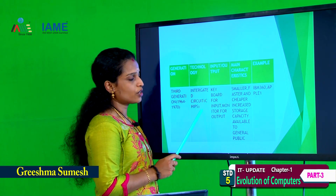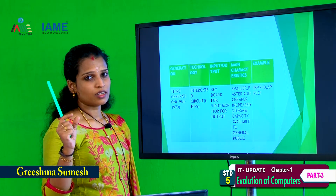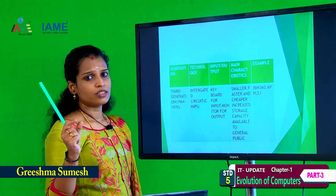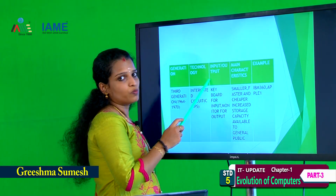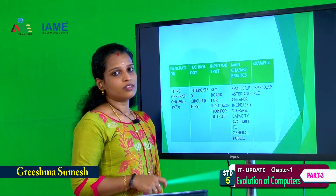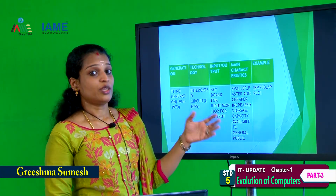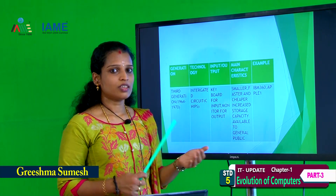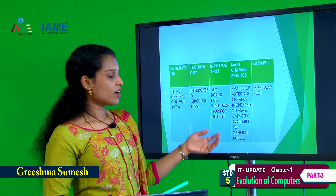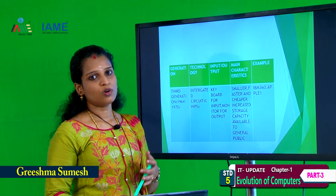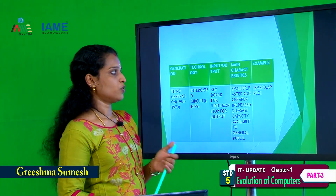Third generation computer used integrated circuits — that is, a chip. Input and output devices changed in third generation computer: input device is keyboard, and output device is monitor.